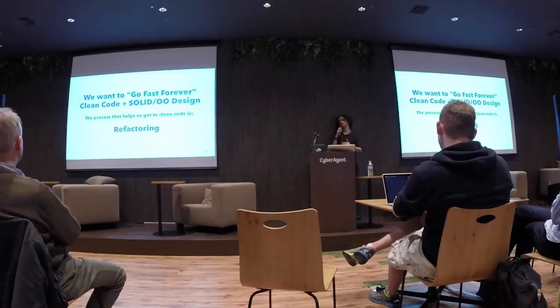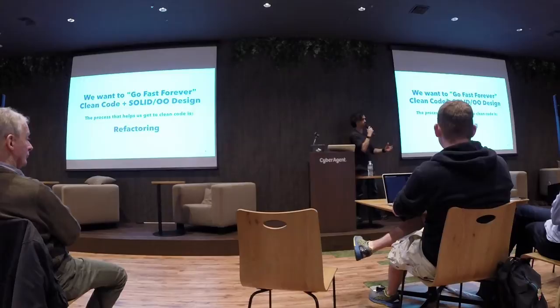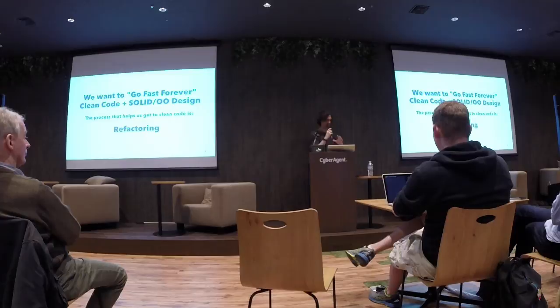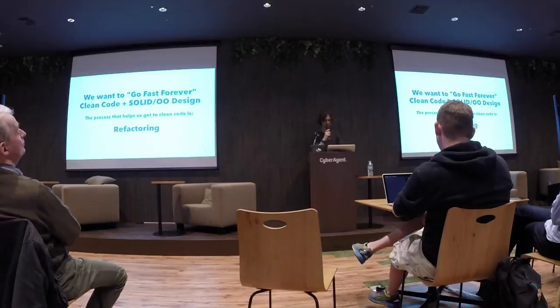The process that helps us get to clean code is refactoring. The very first time we write anything isn't necessarily going to be the most beautiful thing. It doesn't matter if it's a presentation, blog post, book, or code — we're authors, we have an audience. In order to get to a cleaner state, we need to do some refactoring. That could be changing a method name, extracting a method, any little type of refactoring up to larger ones. That's what helps us keep the code clean and conforming to these principles.